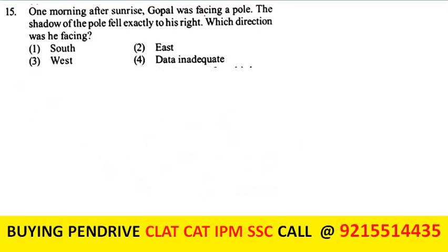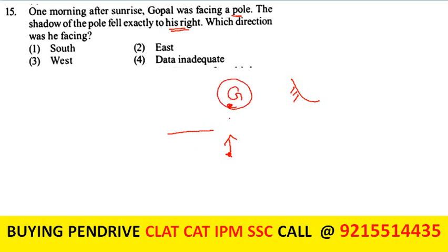One morning after sunrise, Gopal was facing a pole. The shadow of the pole fell exactly to his right. Since the sun rises in the east, shadows fall to the west. If the shadow is to Gopal's right, then Gopal must be facing south, with west on his right. The answer is south. In these questions, always check whether it is morning or evening time.